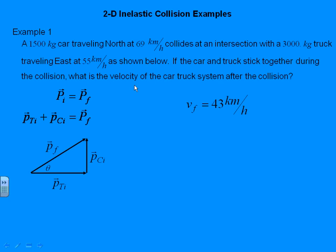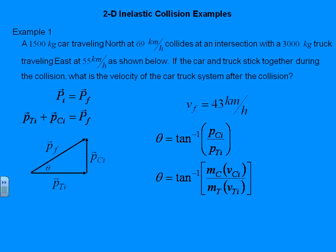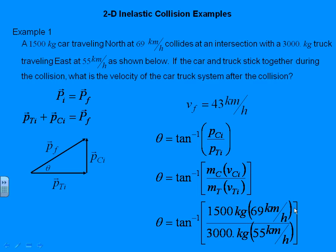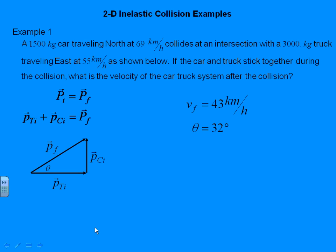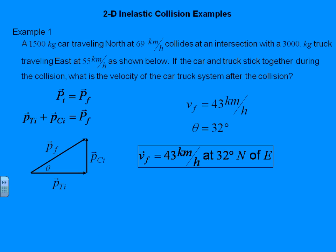Now if we want the full velocity of the car-truck system, this is just the speed — we also need a direction. We've got angle theta in our right-angled vector diagram, so we use the inverse tangent of opposite over adjacent, plugging in each momentum. The units cancel again, and we get an angle of 32 degrees. Since the problem uses cardinal directions, we can use them in the answer: a final velocity of 43 kilometers per hour at 32 degrees north of east.